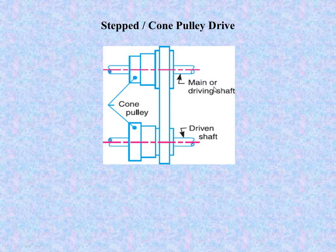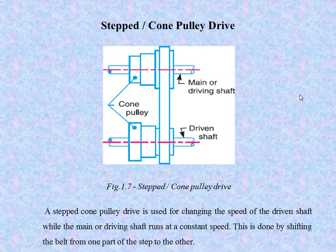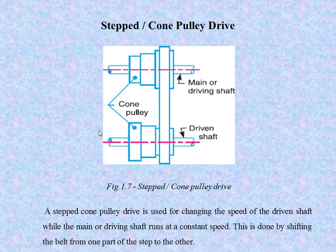Next is the stepped or cone pulley drive. Here, we have the main or driving shaft and the cone pulley. The motion or power is transmitted from the driving shaft to the driven shaft. A stepped or cone pulley drive is used for changing the speed of the driven shaft while the main or driving shaft runs at constant speed. The driving shaft rotates at the same speed, but the speed of the driven shaft may be different — this achieves speed reduction. This is done by shifting the belt from one step to another.